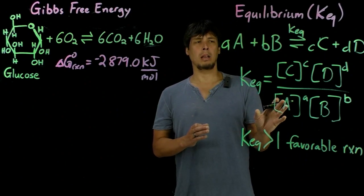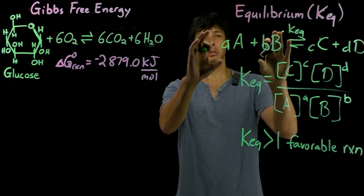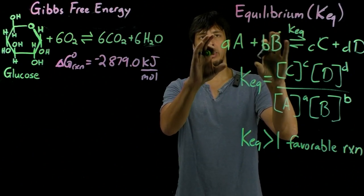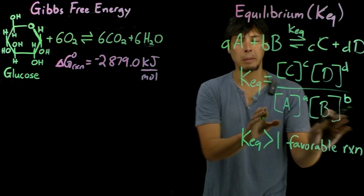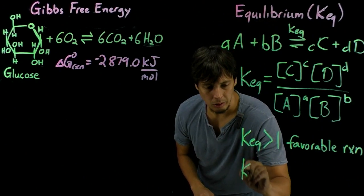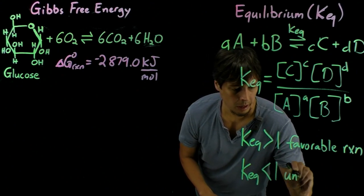Whereas if the equilibrium lies to the left with the reactants, and after equilibrium there's still more reactants than there are products, that means the larger terms will be in the denominator, which means Keq will be less than one for an unfavorable reaction.